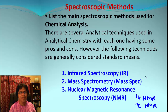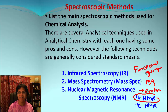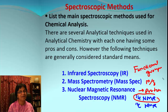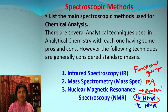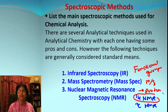Each technique gives us different information. IR mainly tells us the type of functional groups present — for example, is it an amino group or an OH group — but it does not tell us how many groups there are or where they are located. Mass spectrometry gives you the m/z (mass-to-charge ratio), which helps find the molar mass, and also gives fragment ions that provide clues about the structure. Proton NMR tells you the number of hydrogen atoms linked to specific carbon atoms, which can totally help in solving the puzzle and determining the structure of the organic compound.